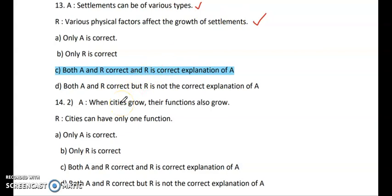Question 14 — Assertion: When cities grow, their functions also grow. Reasoning: Cities can have only one function. The reasoning is wrong — cities are involved in many functions like transportation, tourism, trade, and industrialization. Cities can have multiple functions; that is why they are called metropolitan cities. So only A is correct — option A is the answer.